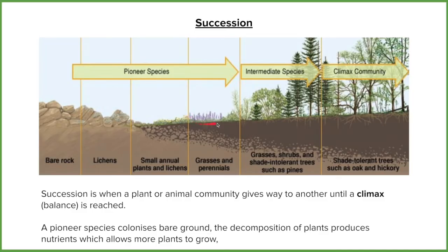These perennials start breaking down the rock with their roots. There's more plant matter — more biotic matter — so when that dies there are even more nutrients going into the soil. That builds on the foundation so that larger trees and shrubs can now take hold, because they've got larger root bases and need more soil and nutrients, but they are more susceptible to changes in their environment.